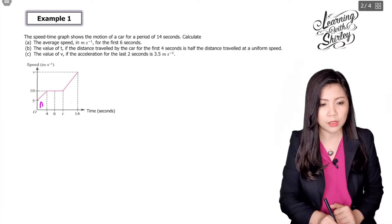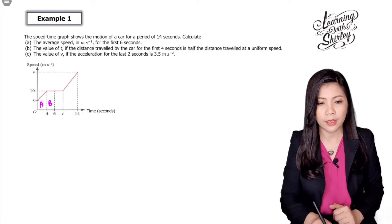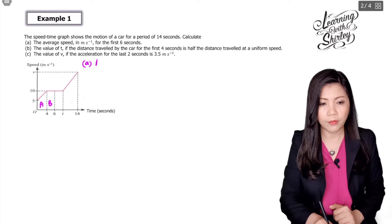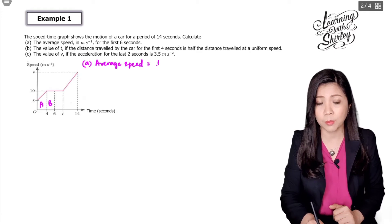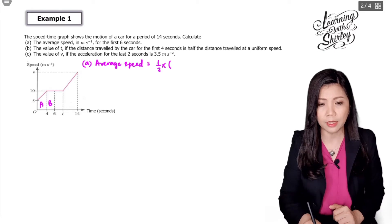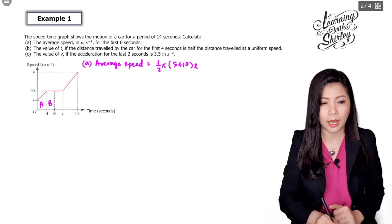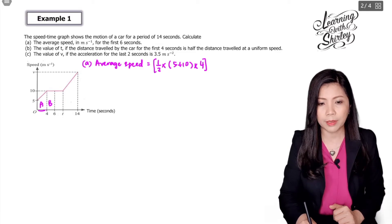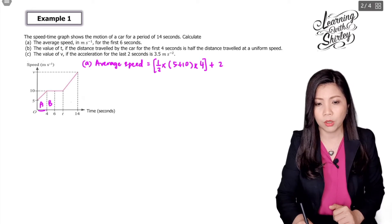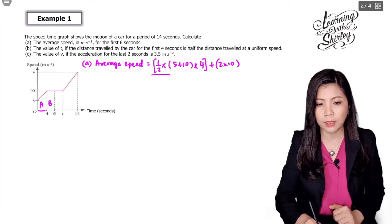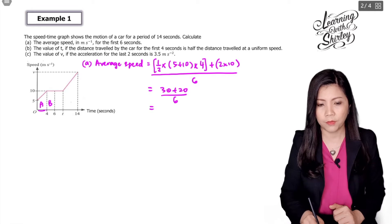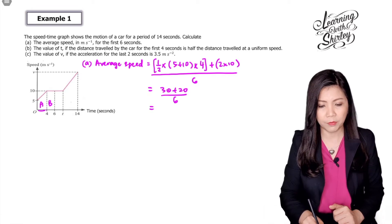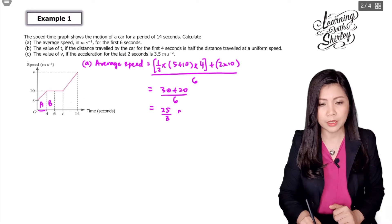For the first six seconds, it's going to be this area plus this area over six seconds. Average speed equals total area: first the trapezium — half times (5 plus 10) times the height 4 — plus the rectangle B, which is 10 times 2, all over 6 seconds. That gives 30 plus 20 over 6, which is 50 over 6, simplified to 25 over 3 meters per second.